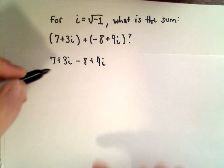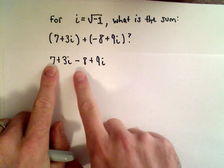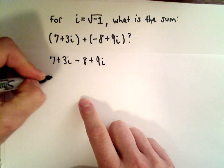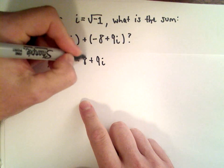And again, now it's just a matter of combining like terms. So we have our constants, we have our 7 and our negative 8. Well, 7 minus 8, that's going to leave us with negative 1. So that takes care of that and that.